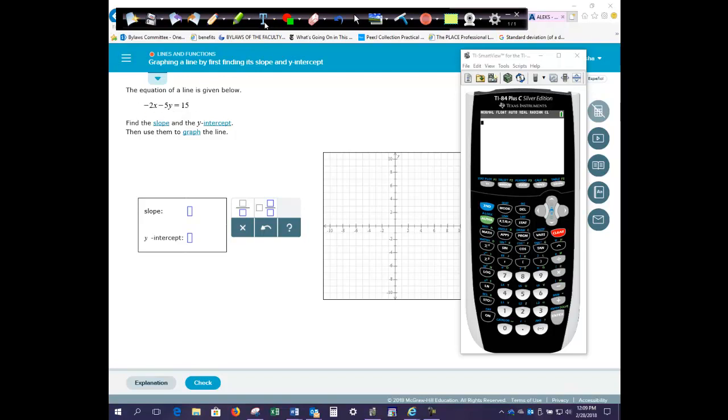This equation is given to us in standard form. And we know that because the x and the y values are on the same side of your equation. So your standard form is ax plus by equals c, where a, b, and c are constants, just numbers.